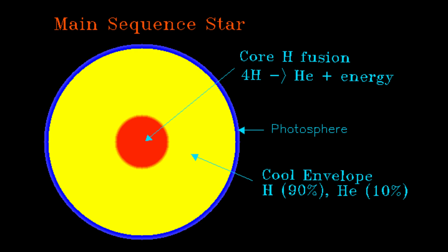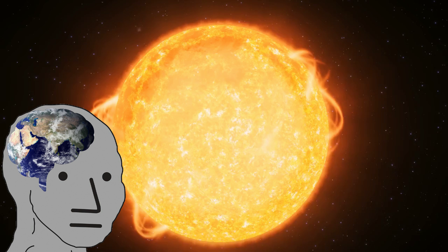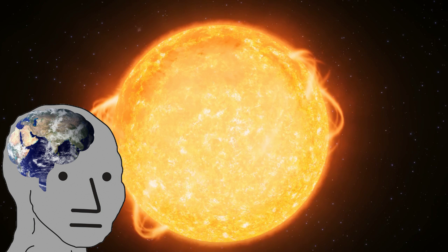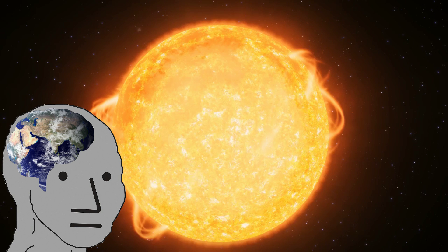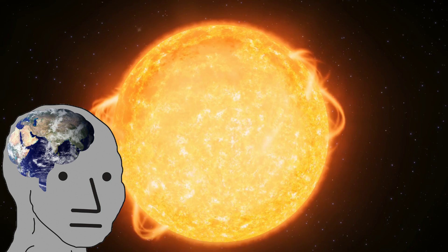A main sequence star is one that's in its phase of nuclear fusion of hydrogen to helium. Most stars that we've observed, including our own, are in their main sequence. On a technical level, our star is a G2V star, indicating it is a main sequence star with a temperature of around 5800 Kelvin.